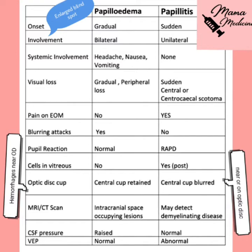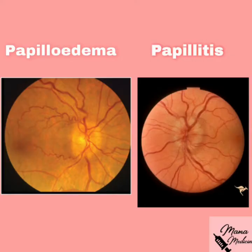To summarize: papilledema is mostly always bilateral, very gradual, and involves peripheral loss of vision with systemic involvement. Papillitis is sudden, unilateral, has no systemic involvement, involves central loss of vision, and is detected earlier in its clinical course.